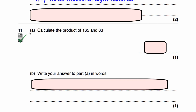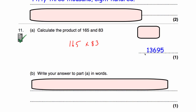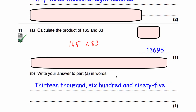Question 11A: we've been asked to calculate the product of 165 and 83. This is a calculator question and the word 'product' means to multiply. Multiplying 165 and 83 gives us 13,695, which we write down as thirteen thousand, six hundred and ninety-five.